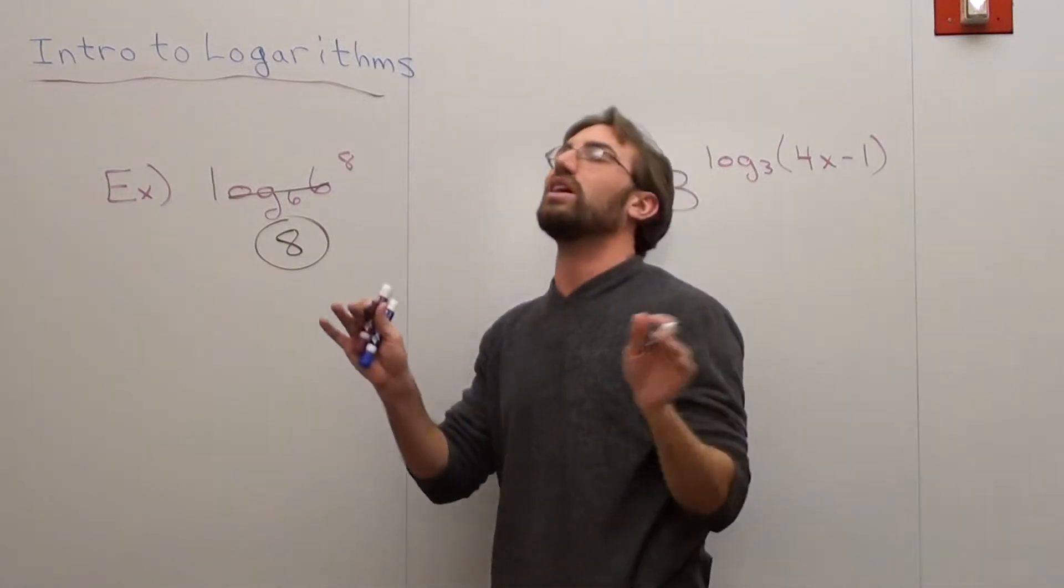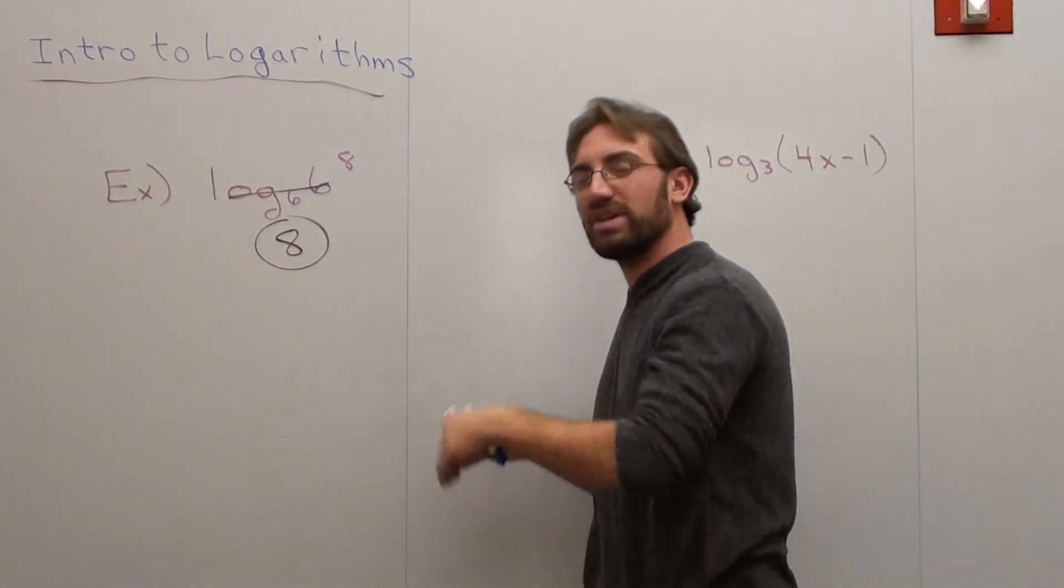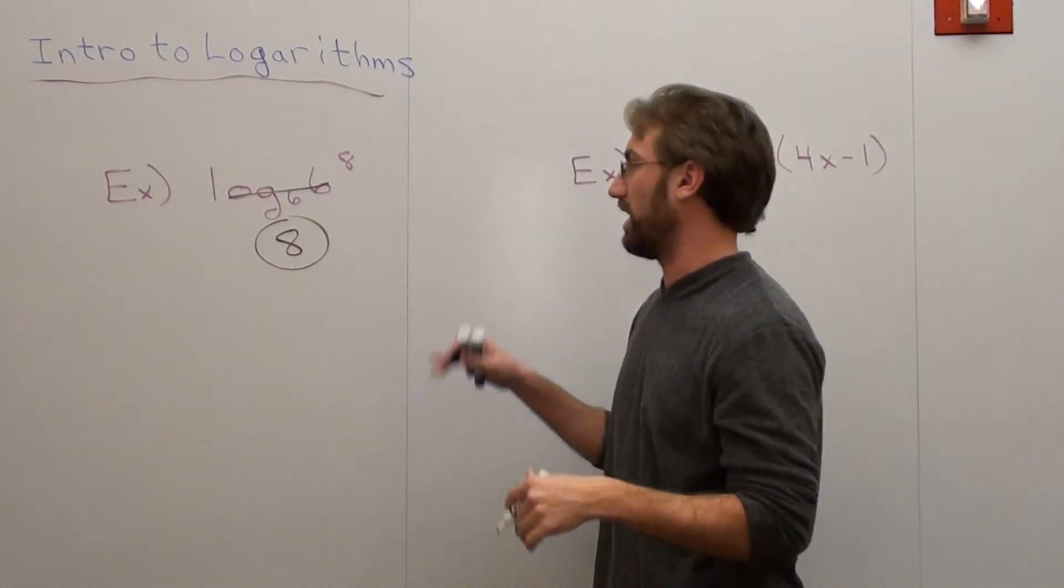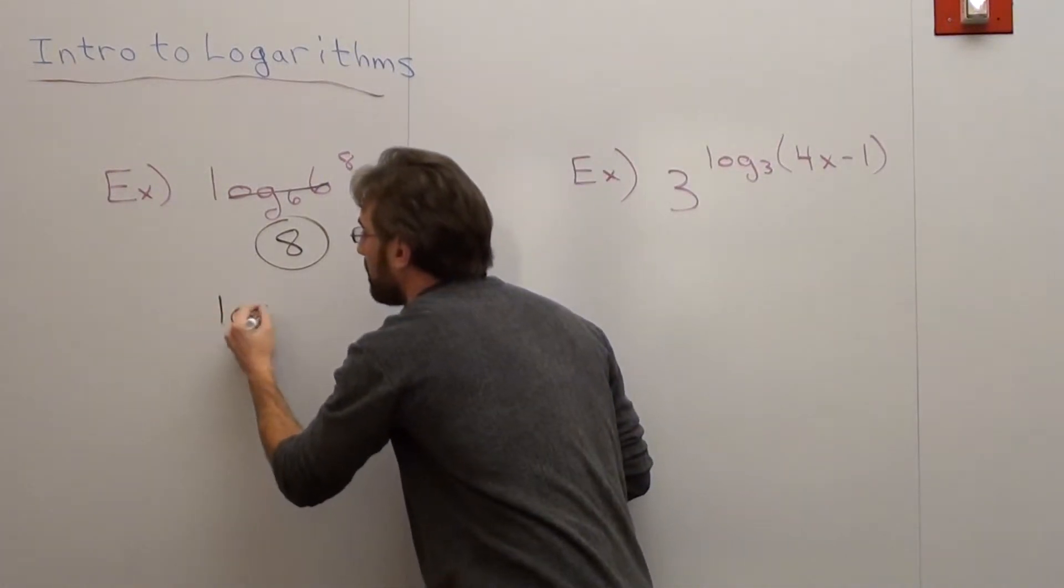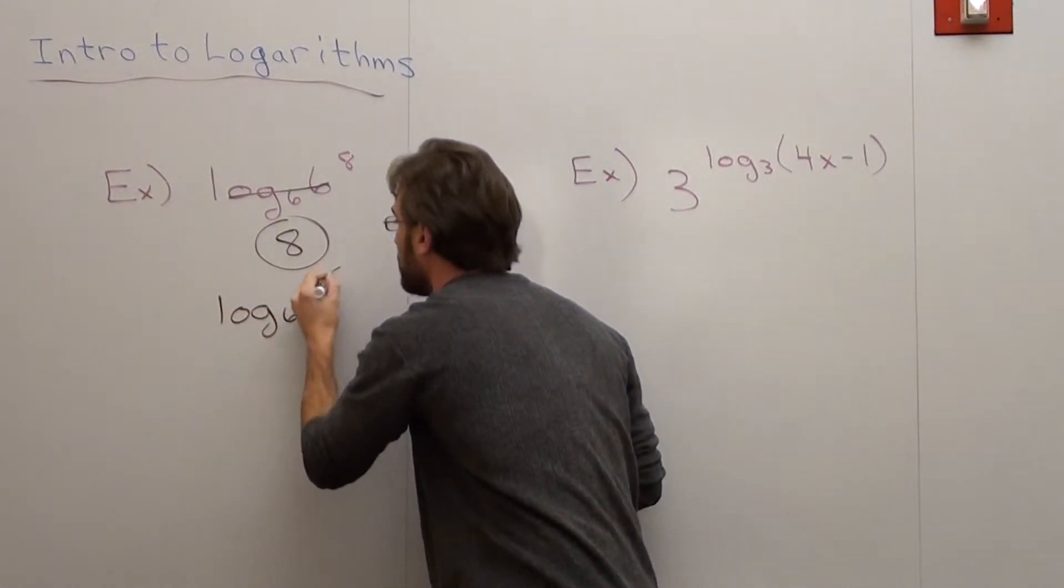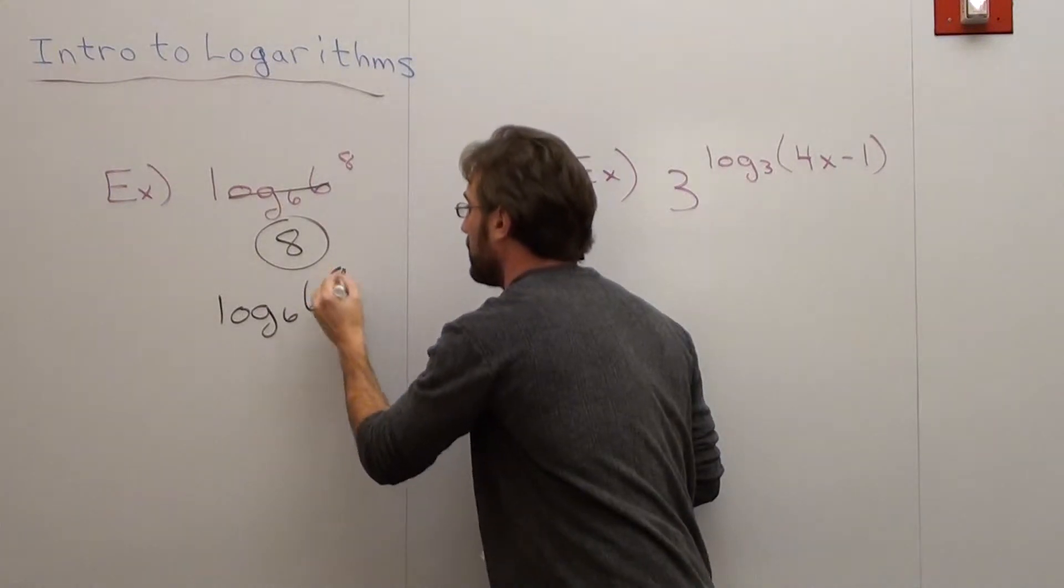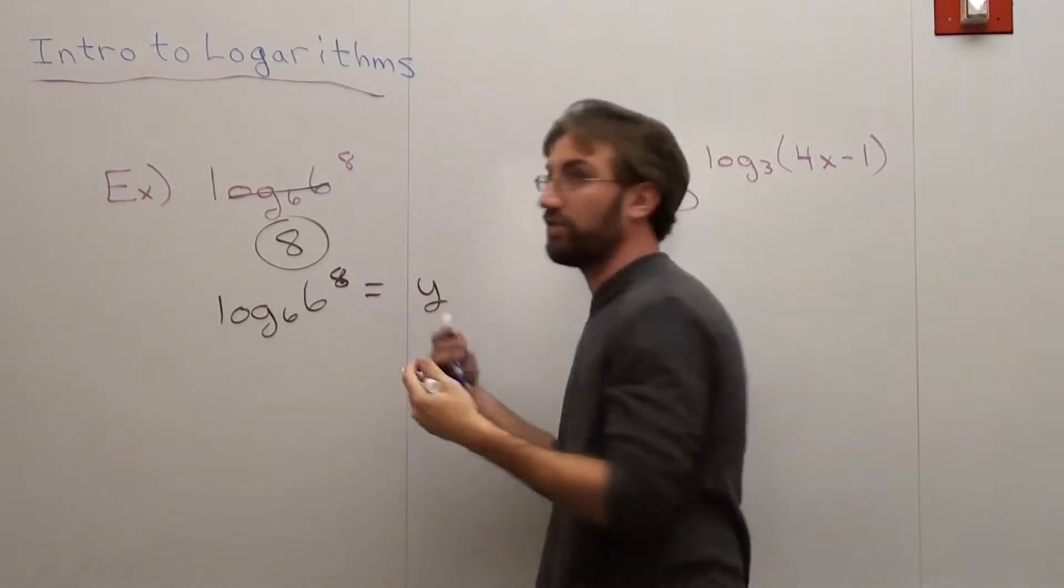Some people might say, explain that again because I didn't understand it. Okay, I'll show you. Log base 6 of 6 to the power of 8 equals y, our variable.